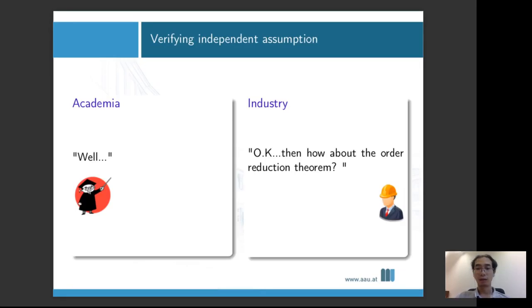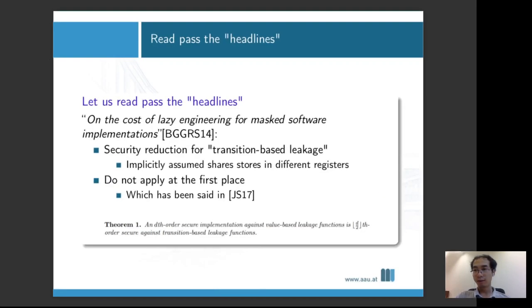Then how about the order reduction theory? Doesn't that protect my implementation? If we go back to the order reduction theory, the theory is basically talking about security reduction for transition based leakage. At that time, there weren't so many implementations where actually storing all the shares within one register. So if you read the proof, this theorem is basically talking about all the different shares storing in different registers. So at the first place, you shouldn't really apply this theorem here. It doesn't really apply to any cases with share slicing. Interestingly, this point has already been addressed in the previous publication. It's already mentioned before, but in a completely different tune. They basically said this theorem doesn't really directly apply here. Whether it's more secure or less secure, that's a completely different story.